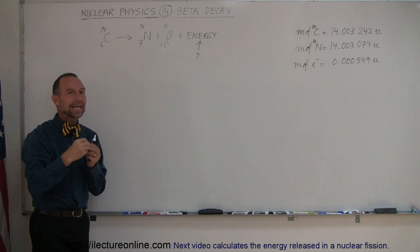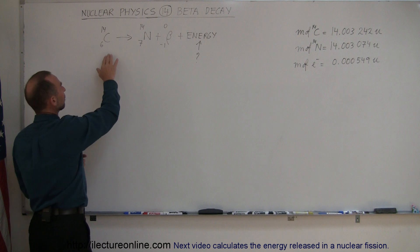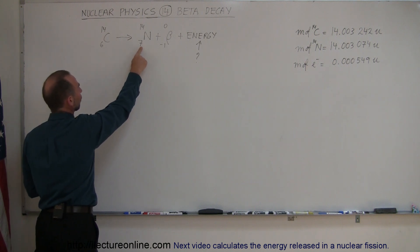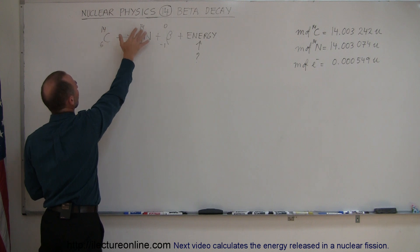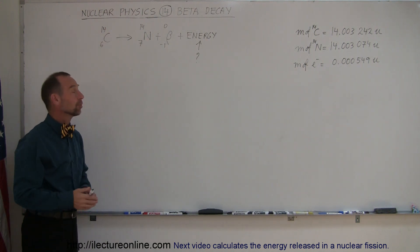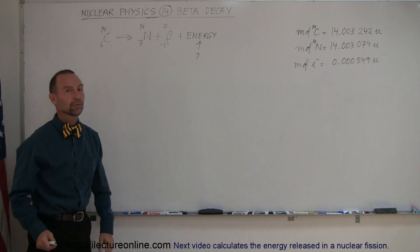So a neutron will eject a negative particle, an electron, and turn itself into a proton. Therefore the nucleus will now have seven protons instead of six protons, and the total number of nucleons will stay the same. It goes from eight neutrons to seven neutrons by taking one of the neutrons and converting it to a proton.